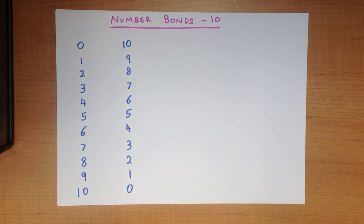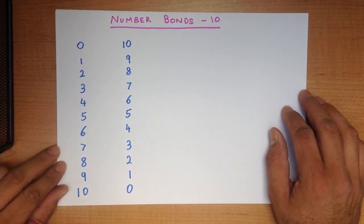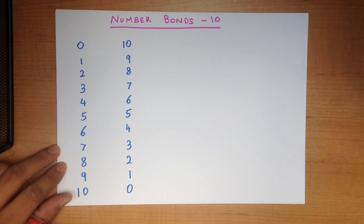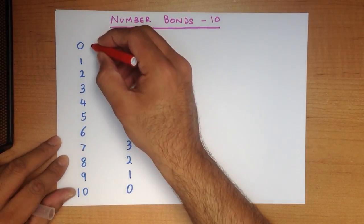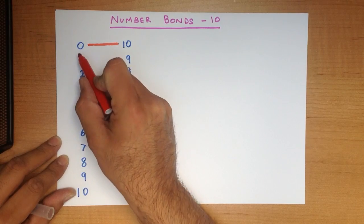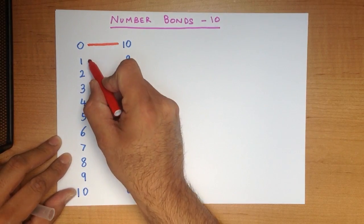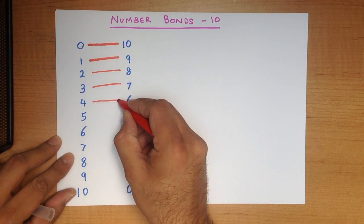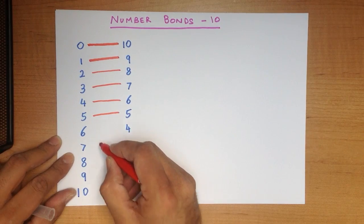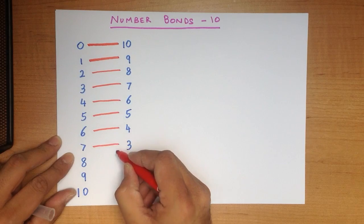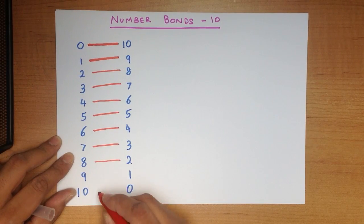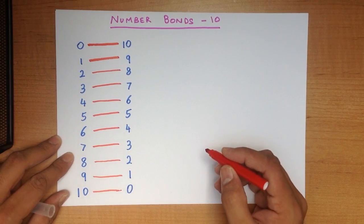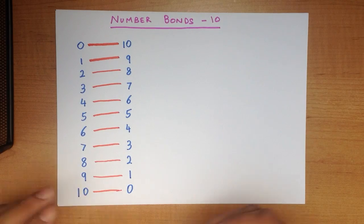So here all we've done is written the numbers from 0 to 10 and here we've written them from 10 down to 0. Now the number bonds to 10 means which two numbers when added together make 10, and this is why we have written it like this. Let's join each of the numbers from left to right. 0 plus 10 equals 10, 1 and 9 makes 10, 2 and 8 makes 10, 3 and 7 makes 10, 4 and 6 makes 10, 5 and 5 makes 10, 6 and 4 makes 10, 7 and 3 makes 10, 8 and 2 makes 10, 9 and 1 makes 10, and the last one 10 plus 0 makes 10. So any of these two numbers when added together make 10.